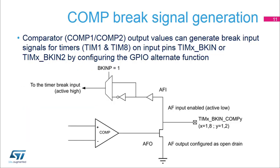Comparator output values can generate brake input signals for the timers on input pins using GPIO alternate function selections, incorporating the I/O open-drain connection. The purpose of the brake function is to protect power switches driven by PWM signals generated by timers. The two brake inputs are usually connected to fault outputs of power stages and three-phase inverters. When activated, the brake circuitry shuts down the PWM outputs and forces them to a predefined safe state.